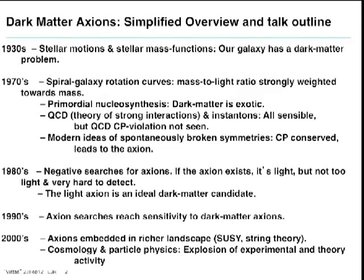Skipping quite a bit and oversimplifying: in the 1970s, spiral galaxy rotation curves were cataloged and the dark matter problem was ubiquitous among all spiral galaxies. To this day, there are no exceptions except for galaxies which are known to be stripped — for instance, Sagittarius Dwarf, which is smeared, has a very poor mass-to-light ratio. Nobody is surprised by that. The mass-to-light ratio strongly weighted towards mass in spiral galaxies — this put the dark matter problem under everyone's nose.